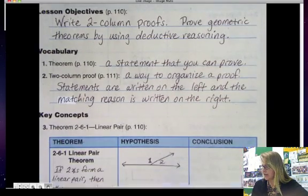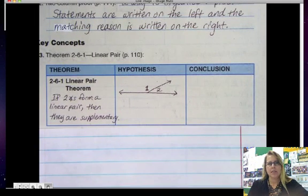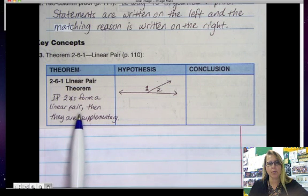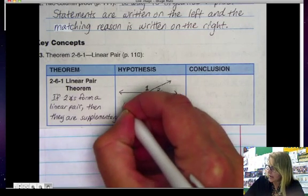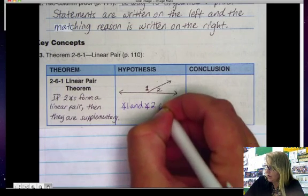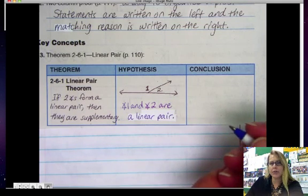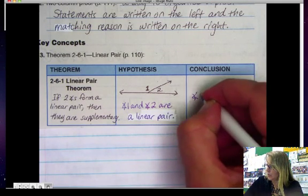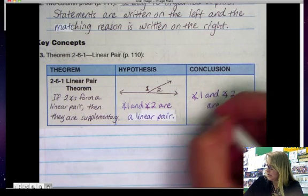Here are some key concepts. First of all, the Linear Pair Theorem. Linear Pair Theorem says that if two angles form a linear pair, then they are supplementary. So here's my picture, and I can say angle 1 and angle 2 are a pair. Therefore,